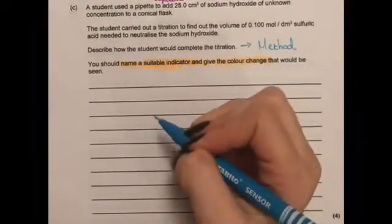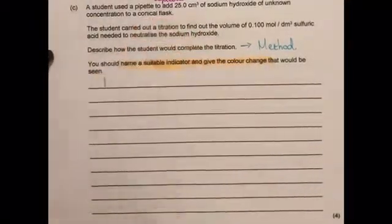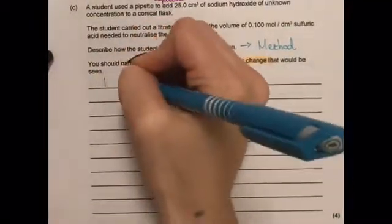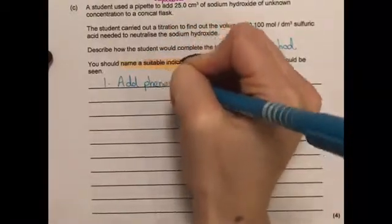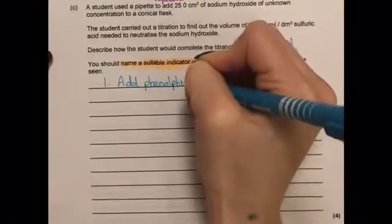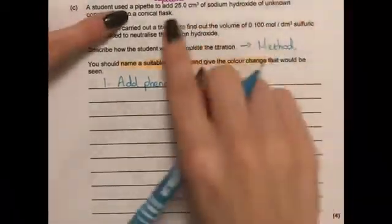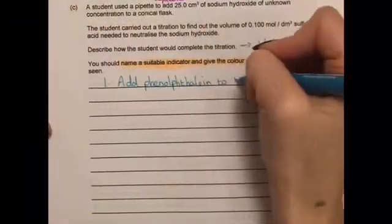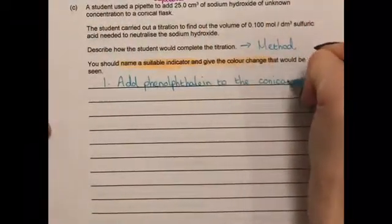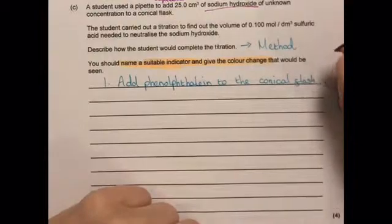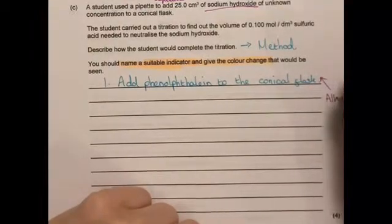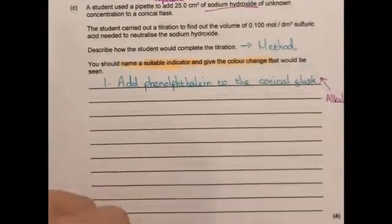For our first mark obviously we need to add our indicator. So I'm going to choose phenolphthalein and we're going to add that to the conical flask. Now it's important to note here that in our conical flask is sodium hydroxide so our indicator is going to start off in alkali.